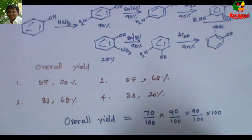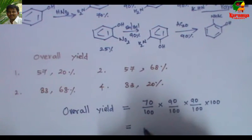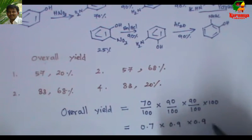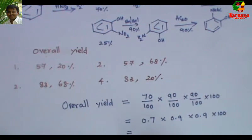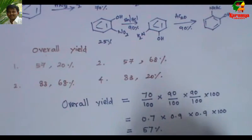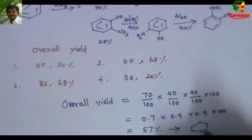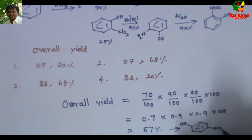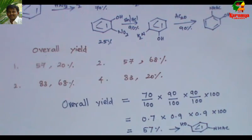It can be further simplified as 0.7 × 0.9 × 0.9 × 100, which gives around 57%. This is the overall yield for the formation of 4-hydroxyacetanilide, that is, paracetamol.